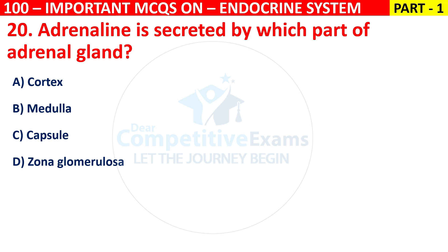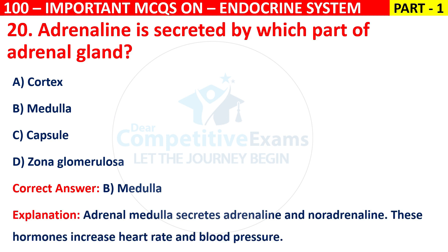The correct answer is B, that is medulla. Adrenal medulla secretes adrenaline and noradrenaline. These hormones increase heart rate and blood pressure.